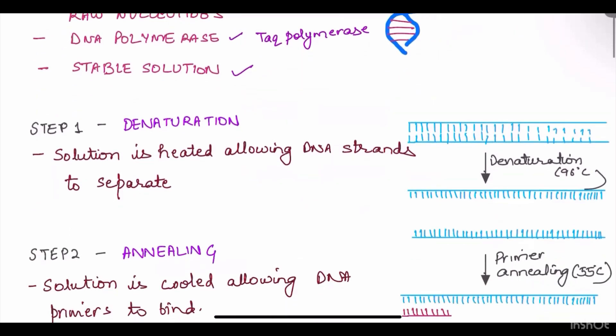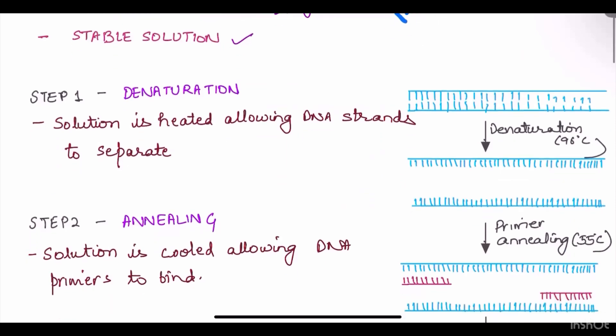Now PCR includes three steps, three major cyclic reactions. First, we have denaturation. Denaturation occurs when the reaction mixture is heated at a temperature of 94 to 96 degrees for about 0.5 to 2 minutes.